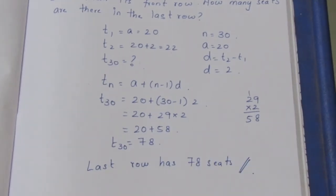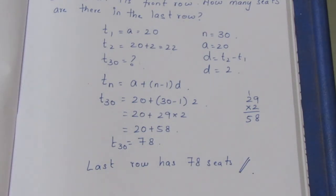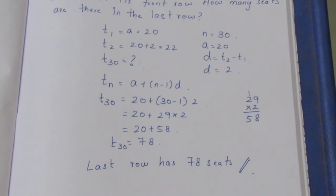I have covered the 30th row. The 30th row is the last row. That's the final answer. That's the sum. Thank you.